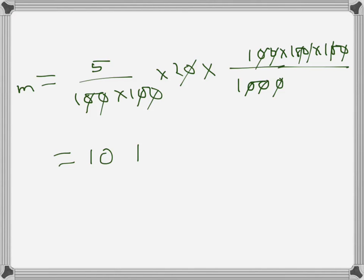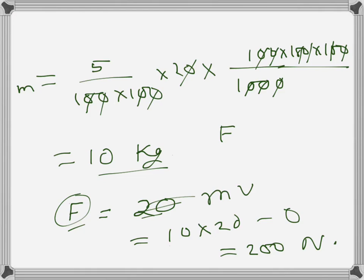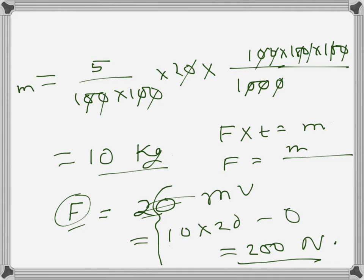After cancelling units, the mass of the water comes out to 10 kg. The change of momentum is 10 kg times 20 meters per second, minus zero, giving 200 Newton. This follows from the impulse formula F × t equals change of momentum, so force equals change of momentum per second — which is 200 Newton.